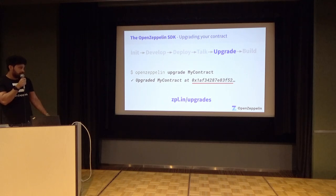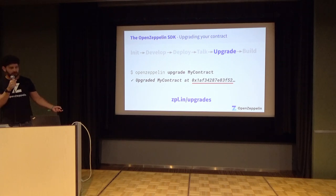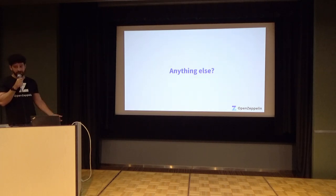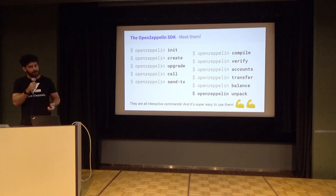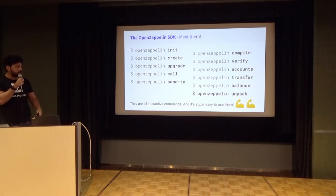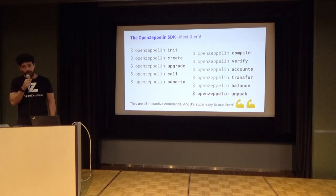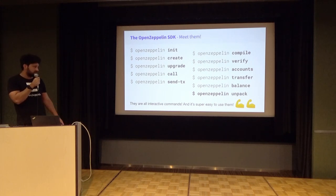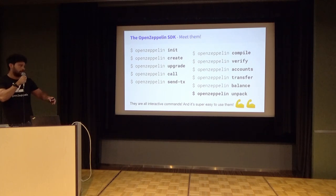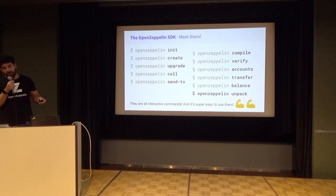I'm not going to go very deep on this topic, but if you want to read more on how we implement this, please go to zepplink slash upgrades. Apart from the commands on the left, we have other handy commands: compile for compiling your contracts with any Solidity version, verify for verifying them to Etherscan, OpenZeppelin accounts for listing your accounts on a specific network, transfer for transferring Ether or ERC20 tokens to any account, and balance to query the ETH or ERC20 balance of any account.